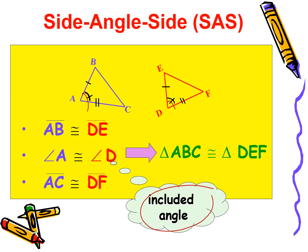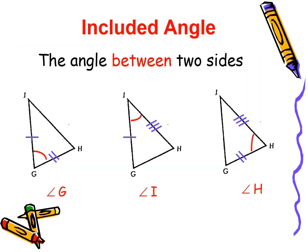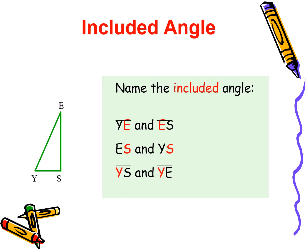What exactly do we mean by included angle? The angle between two sides is known as the included angle. Like in the first figure, for sides GH and GI, the included angle is angle G. In the second figure, for sides GI and HI, the included angle is angle I. In the last figure, for sides GH and HI, the included angle is angle H. Can you name the included angle in the given figure? For YE and ES, it is angle E. For ES and YS, it is angle S. For YS and YE, it is angle Y.